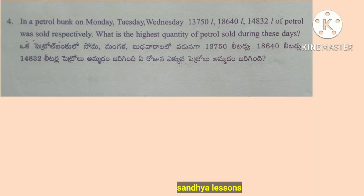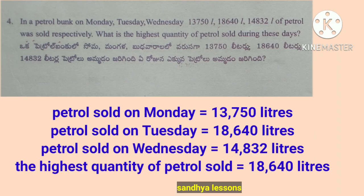Fourth problem: in a petrol bunk on Monday, Tuesday, and Wednesday, 13,750 liters, 18,640 liters, and 14,832 liters of petrol were sold respectively. What is the highest quantity of petrol sold during these days? Solution: petrol sold on Monday is 13,750 liters; Tuesday is 18,640 liters; Wednesday is 14,832 liters. The highest quantity sold is 18,640 liters.